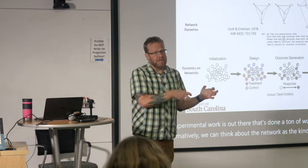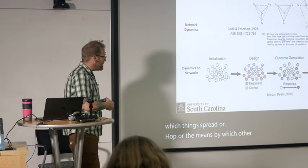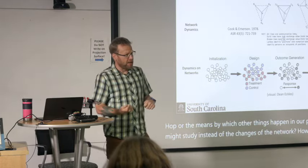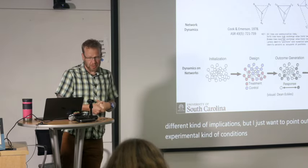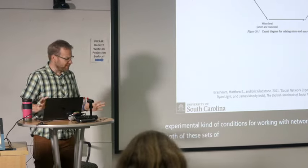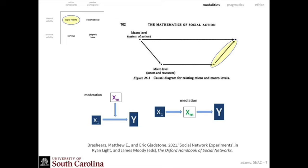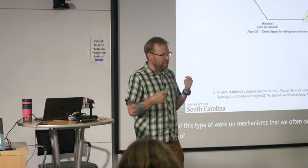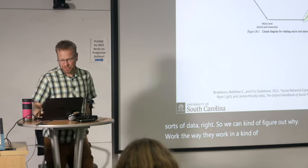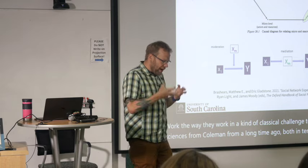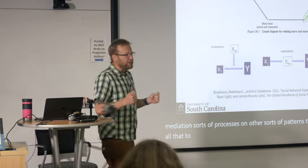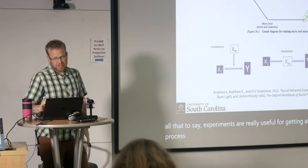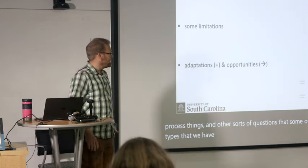We can think about the network as the means by which things spread, and we might study how other things change over the network rather than changes in the network itself. Each approach has very different implications. I think experiments are particularly compelling because we can get a lot out of them on mechanisms — figuring out why things work the way they do — both in terms of aggregating mechanisms and in terms of moderation and mediation processes. Experiments are really useful for getting at controlled, processed questions that some other data types aren't as well equipped for.